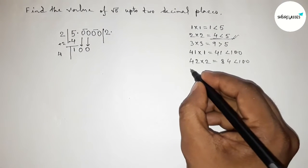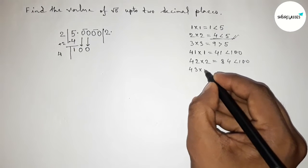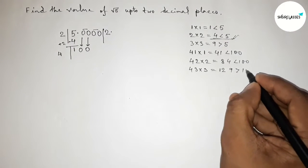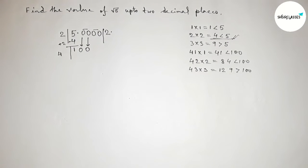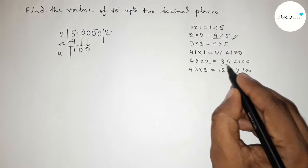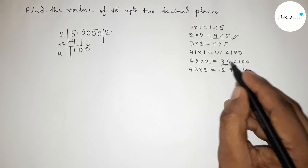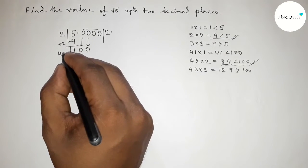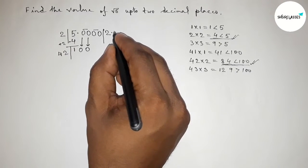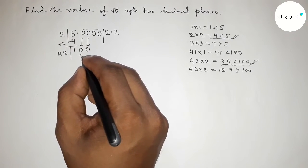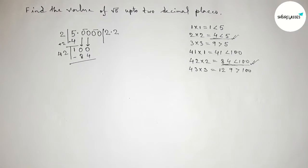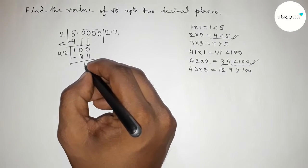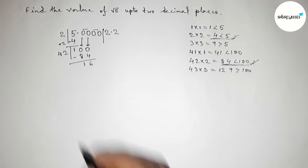If we take 3, then 43×3=129, which is greater than 100. So we take 2 because 84 is closest to and less than 100. Write 2 in the quotient and write 84. Subtracting from 100 gives remainder 16. Bring down the next pair of zeros.